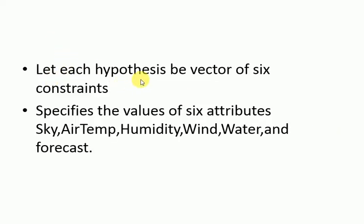Let each hypothesis be a vector of six constraints. The six attributes are sky, air temperature, humidity, wind, water, and forecast.